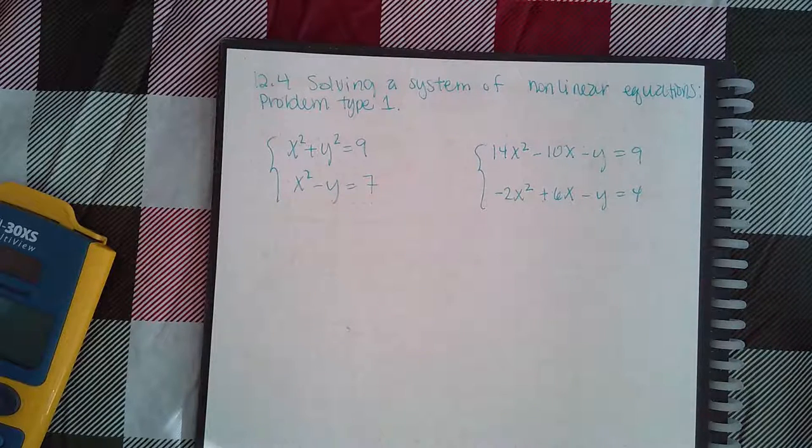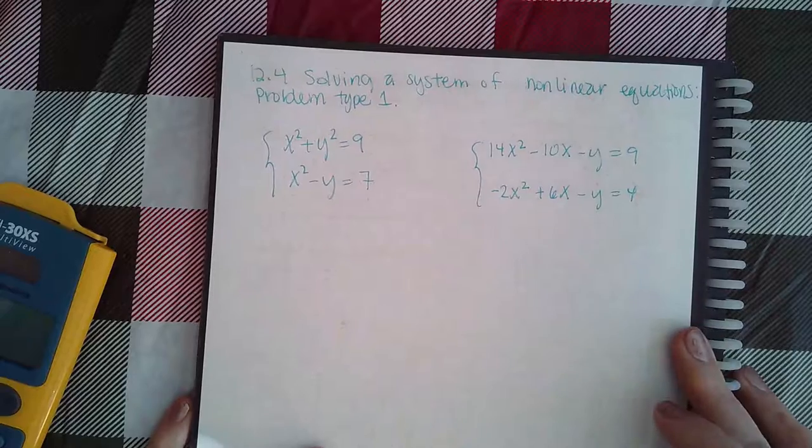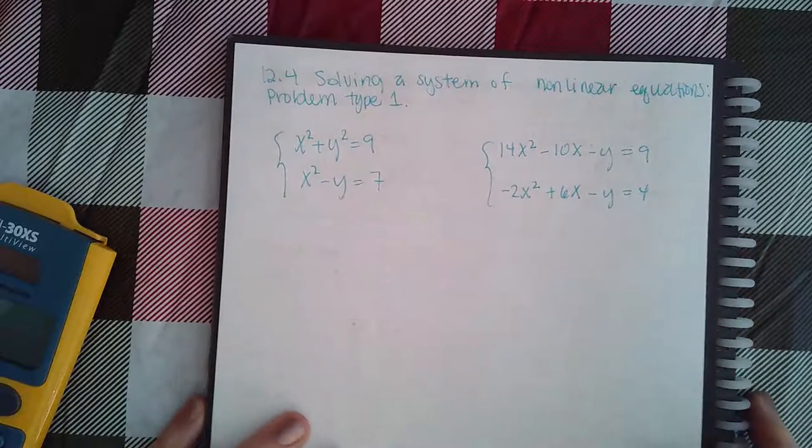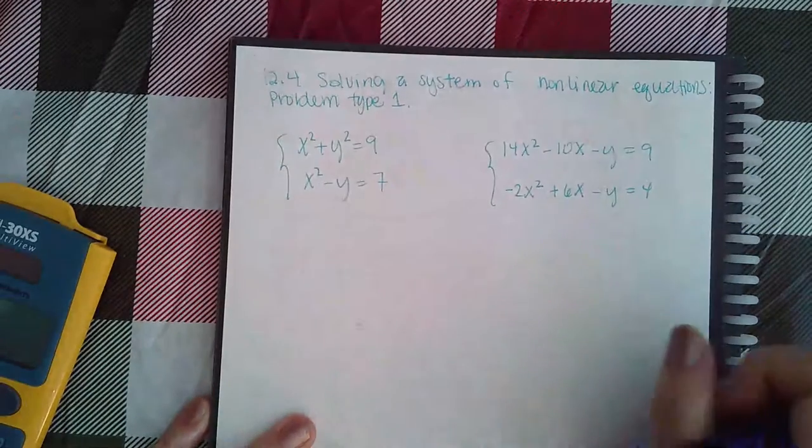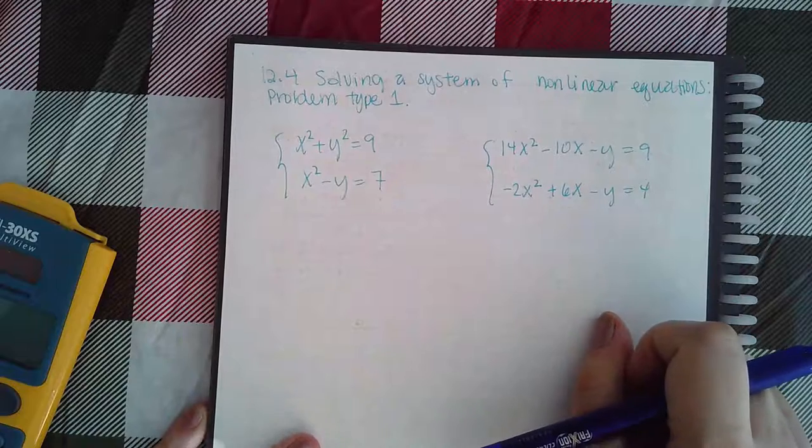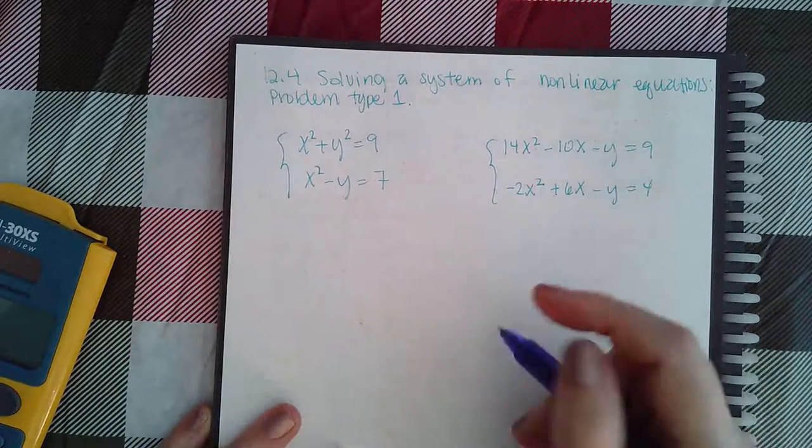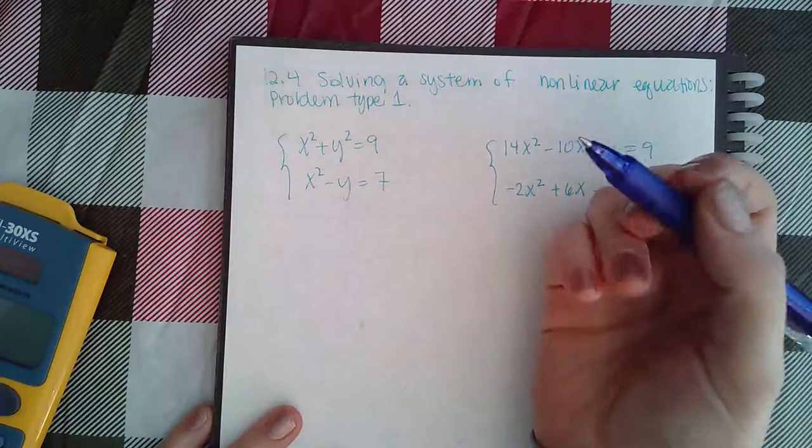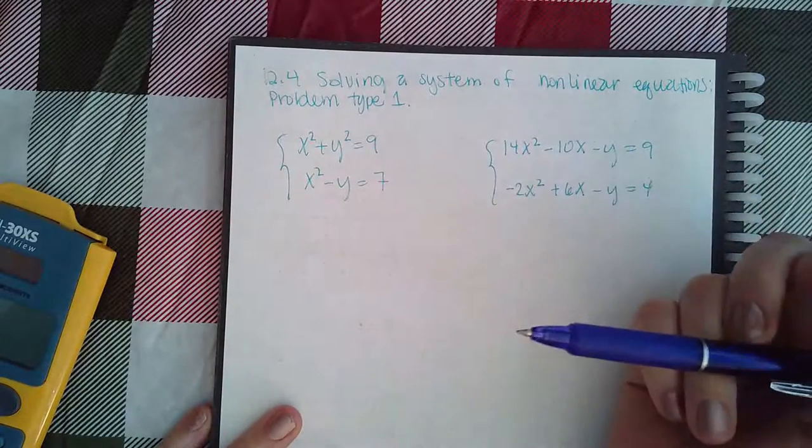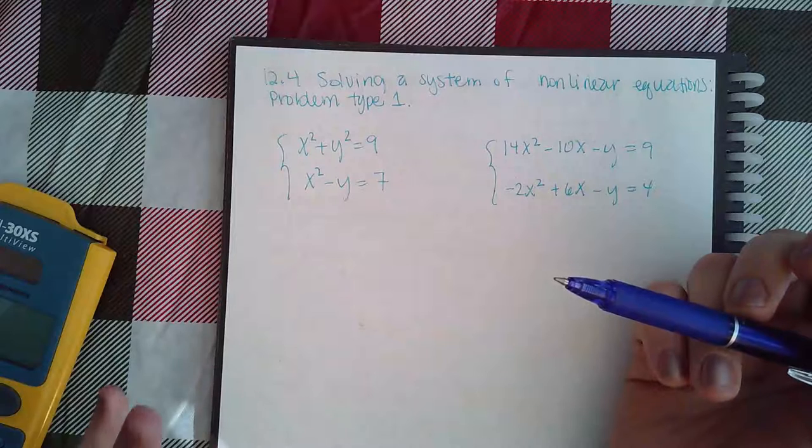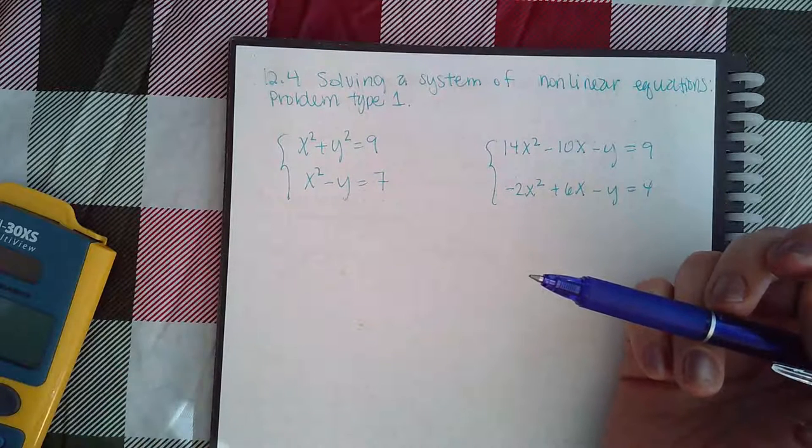Here we have 12.4 solving a system of nonlinear equations problem type one. Notice that both of them are nonlinear, both of them have an expression with a term with an exponent, so we have to solve it by substitution. We need to get one letter in one equation by itself.